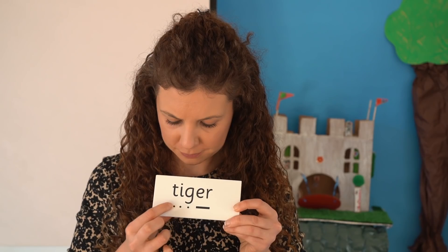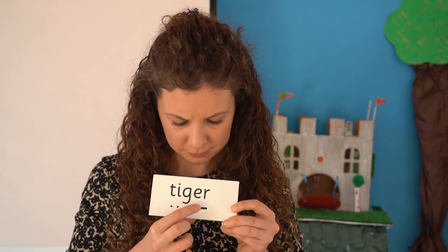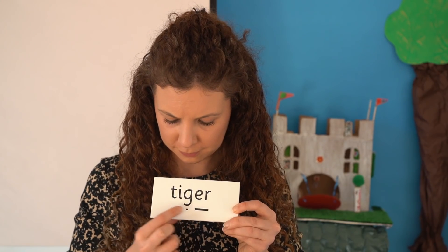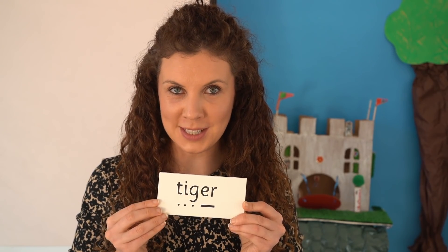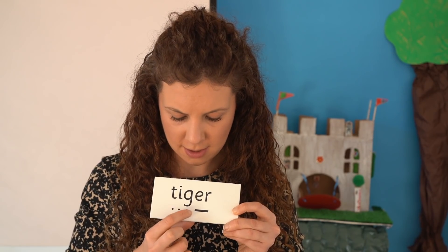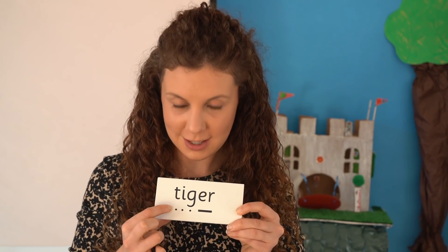This is a longer word, so let's chunk it up. Now let's read the word together. T-I... G-ER. Tiger. Tigers are big, powerful animals. Do you remember our picture? Here we go.